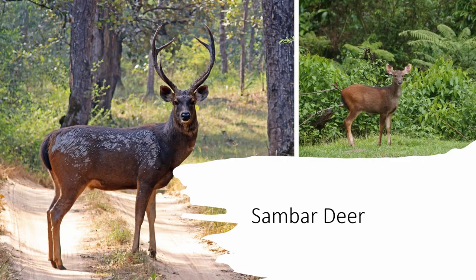The sambar deer is originally from India and Southeast Asia and has been introduced to small areas of the United States in Texas, California, and Florida. It's dark brown, which is good enough to identify it from all other introduced deer species. It also has antlers with three points and is fairly large for a deer, about 400 to 700 pounds.